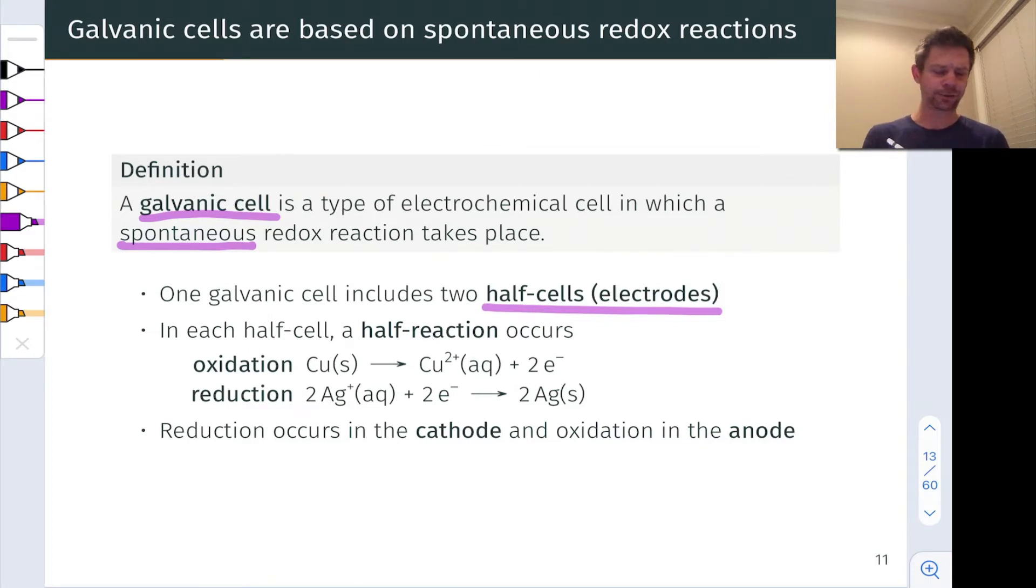In the case of this copper-silver situation, for example, we can identify that the copper metal is being oxidized to produce copper two plus, and the silver plus is being reduced to produce silver metal.